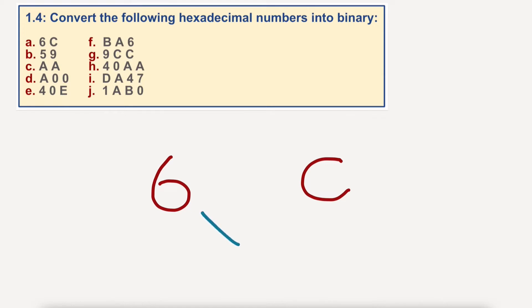So I'm going to draw one, two, three, four eyelash marks. This will become clear in a moment. Then one, two, three, four more.